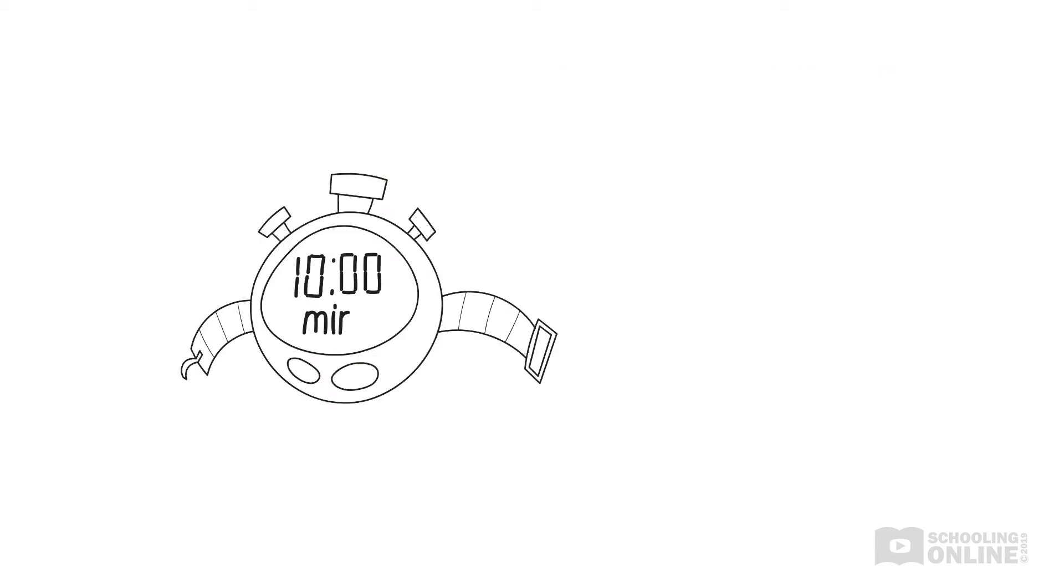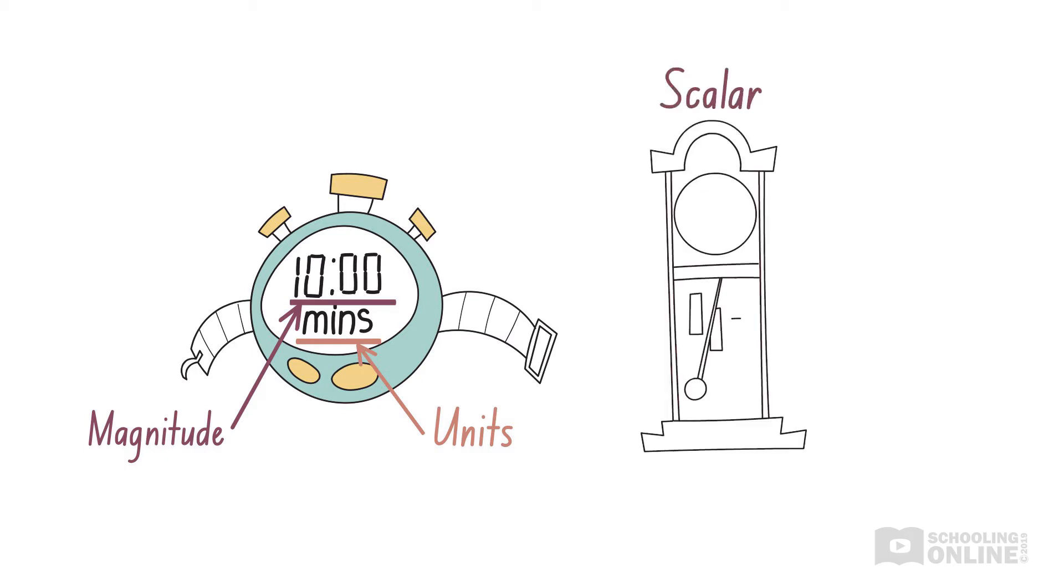Mark steps into the bathroom and starts the countdown timer on his wristwatch. Now let's take a closer look at the time, 10 minutes. It has a magnitude of 10 and units of minutes. Therefore, this is a scalar quantity. In general, time intervals are scalar quantities because they include magnitude and units only.